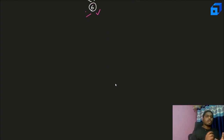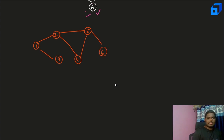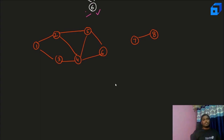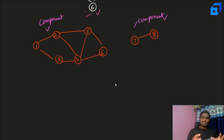Let's take another example for a clearer picture. Consider a graph: node 1 has adjacents 2 and 3; node 2 has 4 and 5; and there's a cycle. Surprisingly, we have another separate graph here with nodes 7 and 8. Is this a valid graph? Yes. This entire part forms one component, and the other part forms a second component. There will be important questions based on component graphs in future videos.